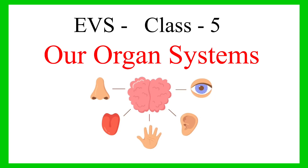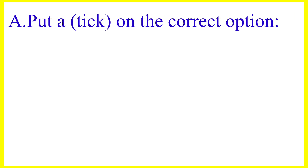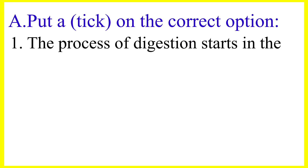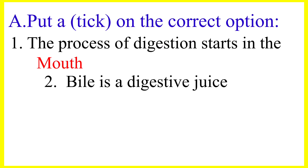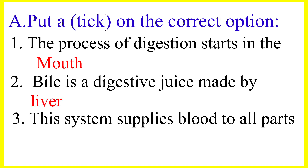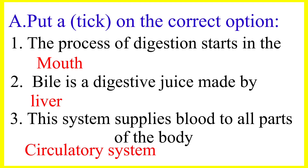Today we are going to learn about our organ systems. Put a tick on the correct option. The process of digestion starts in the mouth. Bile is a digestive juice made by the liver. This system supplies blood to all parts of the body — Circulatory system. B.